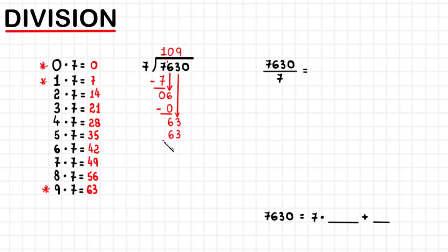So we subtract now. 63 minus 63 is 0. After a subtraction, we bring down the next digit. It is 0. So here we have 0, 0. We brought down 0. We have to ask the question, what number do I multiply by 7 to get almost 0 or 0 itself? By looking at the multiplication table, you will see that the number is 0.